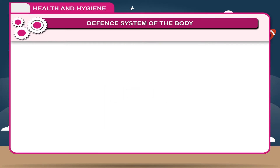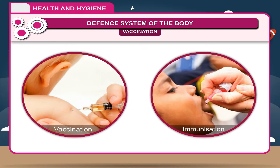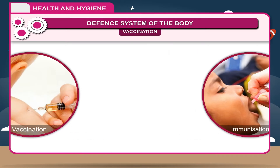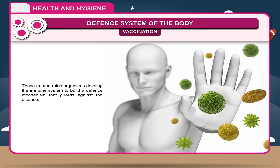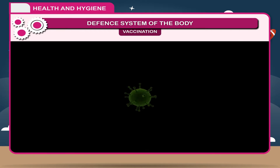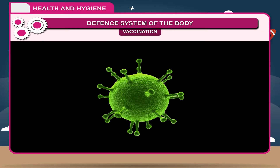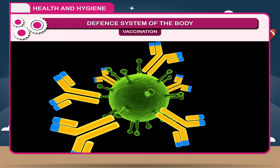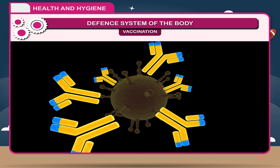Vaccination or immunization is a method of developing resistance in the human body to specific diseases using microorganisms such as bacteria or viruses. These treated microorganisms develop the immune system to build a defense mechanism that guards against the disease. If an immunized person in future comes in contact with the disease-causing agent, the immune system is immediately able to respond defensively.